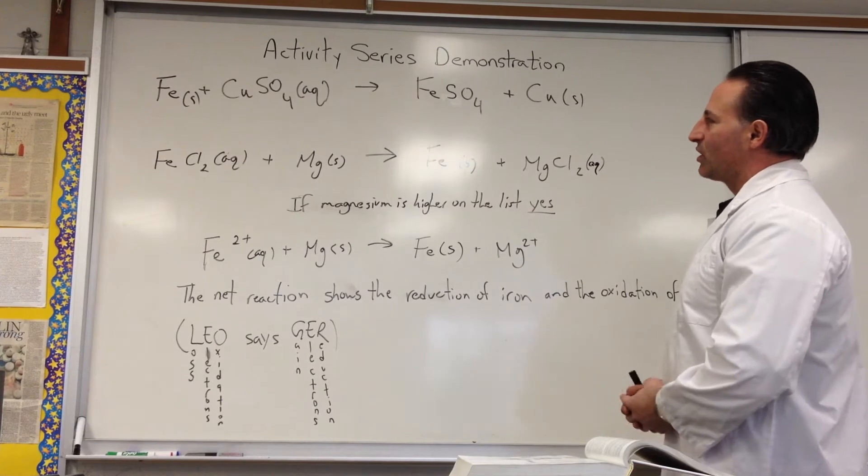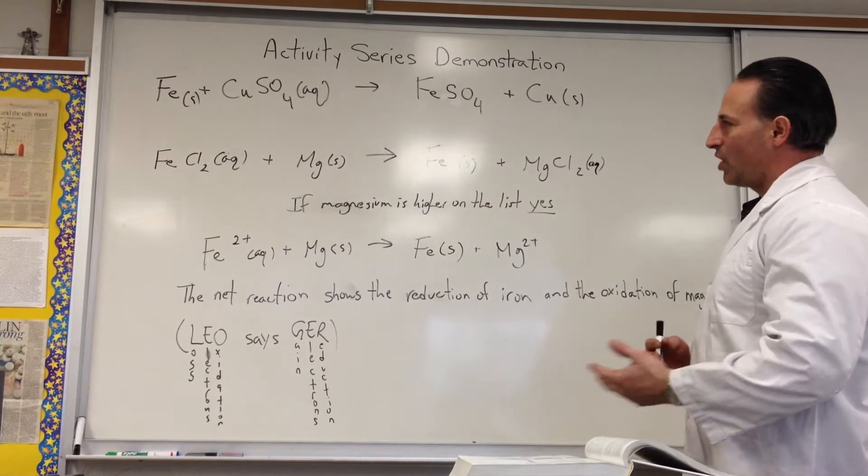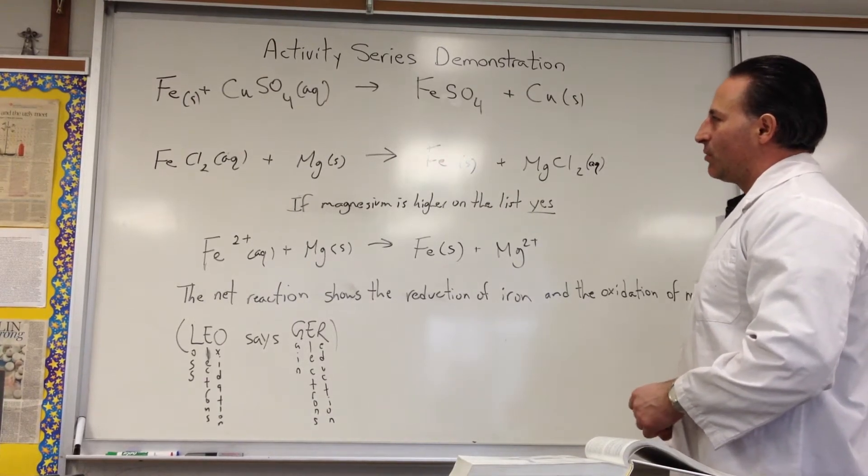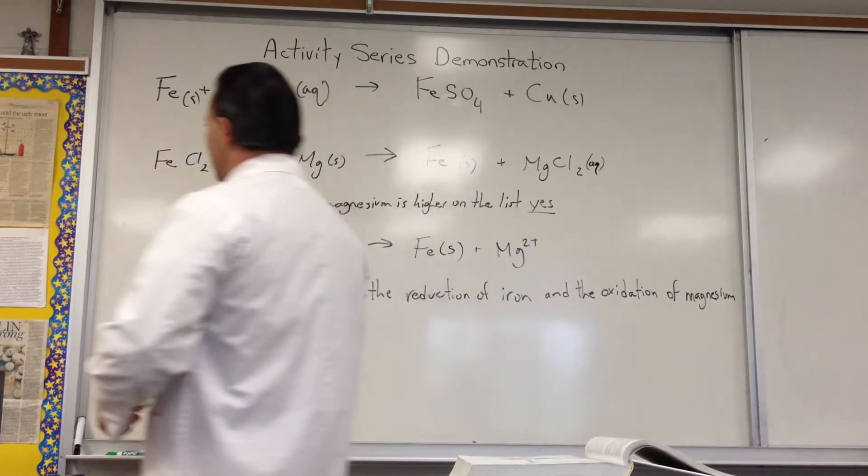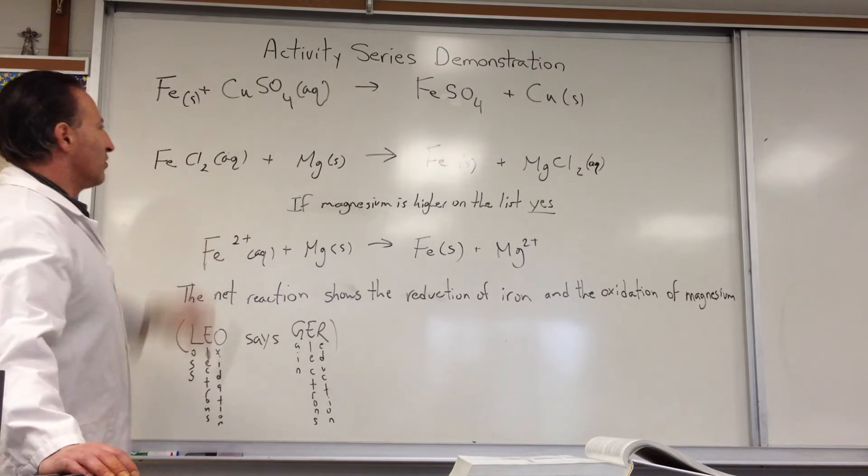Typically when we think of metals, we think of substances that give up electrons easily. Both copper and iron are known to give up electrons because they're metals. But what we have in today's demonstration is a sample of iron in the form of a nail in a solution of copper sulfate.